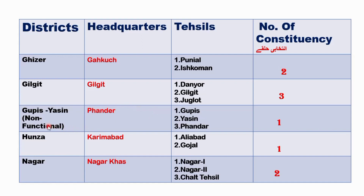Tehsils in Gupis-Yasin: there are three Tehsils — Tehsil Gupis, Tehsil Yasin, and Tehsil Fandar. In Hunza, there are two Tehsils: Aliabad and Gojal. In Nagar, there are three Tehsils: Nagar 1, Nagar 2, and Chalt Tehsil.